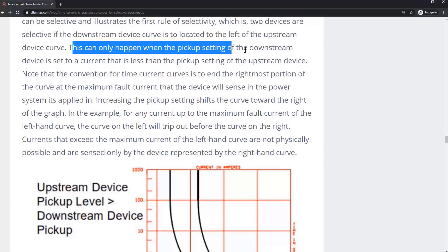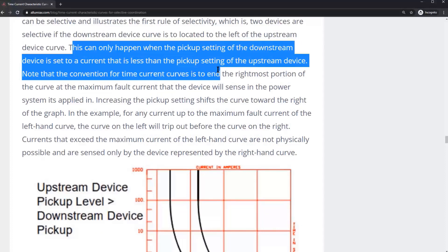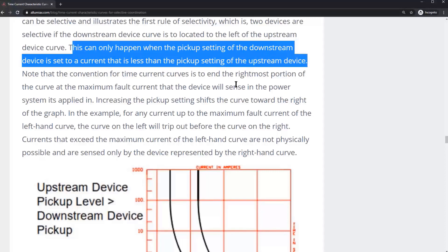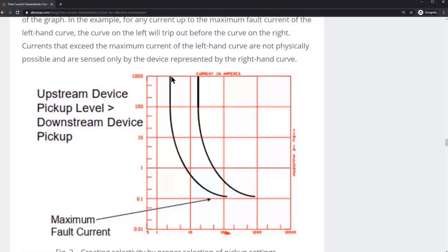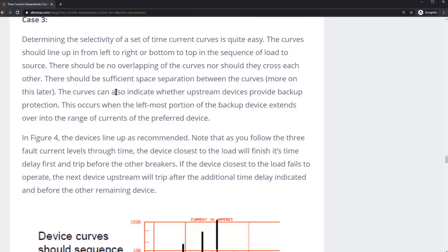This can only happen when the pickup setting of the downstream device is set to a current that is less than the pickup setting of the upstream device. This pickup value is for the downstream device, and this pickup value is for the upstream device.